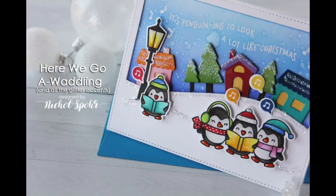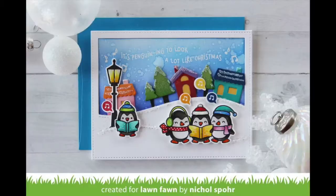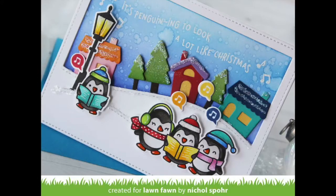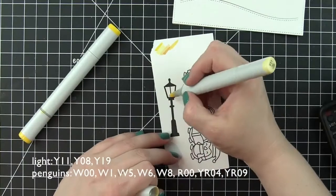Hi there, it's Nicole here for Lawn Fawn, and today I am sharing a card made with the adorable Here We Go A Waddling Stamps and Dies. I'm going to be using the landscape stitched hillside backdrop to build the background scene for my adorable little Christmas caroling penguins.